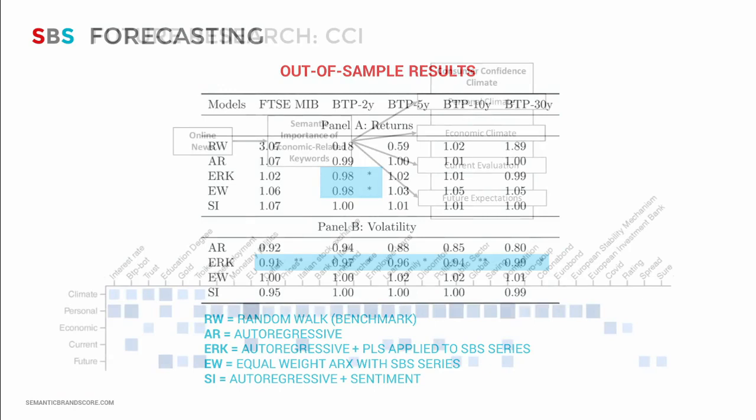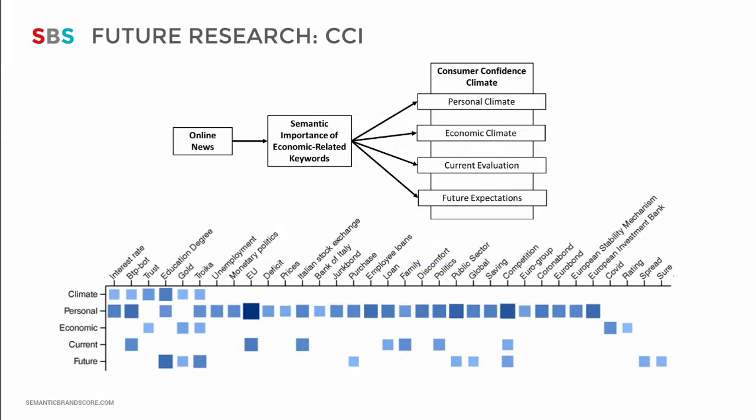Given these promising results, we move forward by considering the impact that economy-related keywords appearing in news can have on other aspects of the economy — for example, on the Consumer Confidence Index. We found that the semantic importance of specific terms appearing in news can affect consumers' feelings about the current and future state of the economy. These are preliminary results, but we can now use news to anticipate indexes like the CCI.